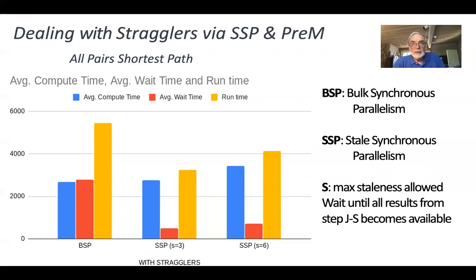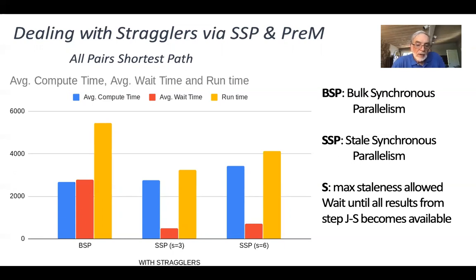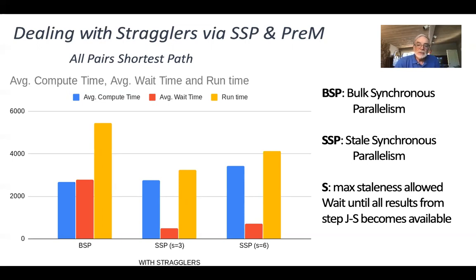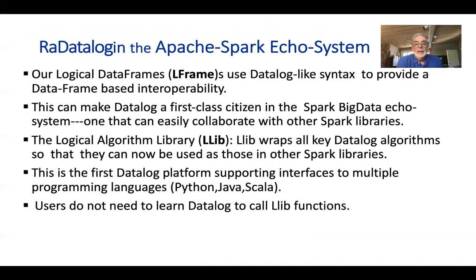We tested all-pairs shortest path on a multi-core system, comparing bulk synchronous parallelism with state-synchronous parallelism and state-plus-signal parallelism. There is a parameter S — the maximum staleness allowed. With bulk synchronous parallelism there is nearly as much waiting time as computation time. With S equal to three, we dramatically reduce wait time, reducing overall computation time. However, doubling the staleness threshold causes performance to degrade, as the probability of having to undo premature results increases. There is an optimal S that needs to be determined for best performance.